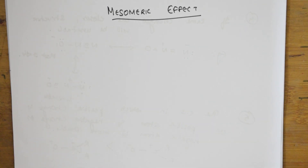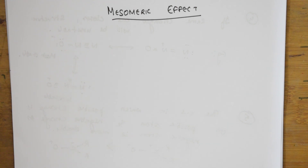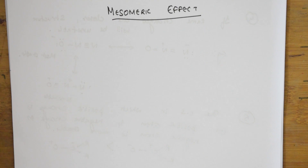Welcome back students to one more session of general organic chemistry. Today's topic is the concept of mesomeric effect. In the previous video I taught you the concept of resonance and the stability order in terms of polar and non-polar molecules. Till now I have covered topics like hyper conjugation, inductive effect, electromeric effect, tautomerism, metamerism, and the differences between tautomerism and resonance.